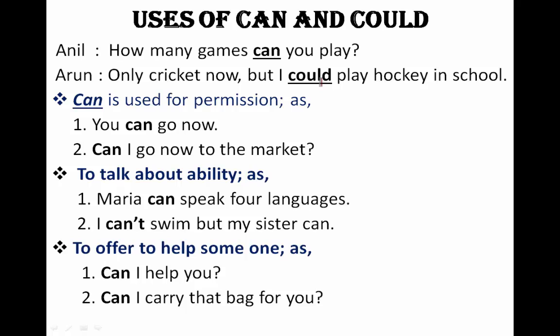So can is used for present time and could for the past. Can is used for permission, for example: 'You can go now' or 'Can I go to the market now?' To talk about ability: 'Maria can speak four languages' — this denotes Maria's ability.